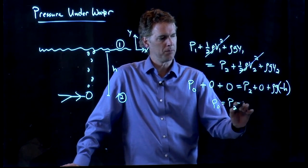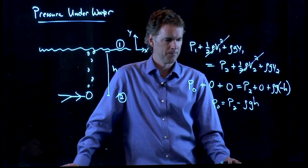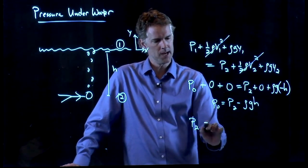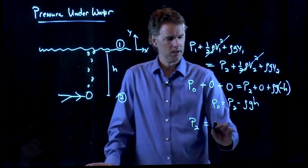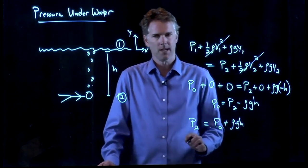P naught is equal to P2 minus rho GH. We want to solve for P2. And so we move rho GH over to the other side. And we get P naught plus rho GH.